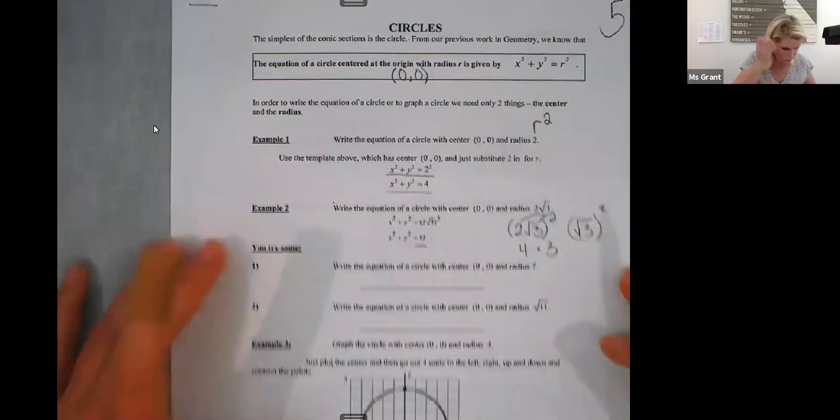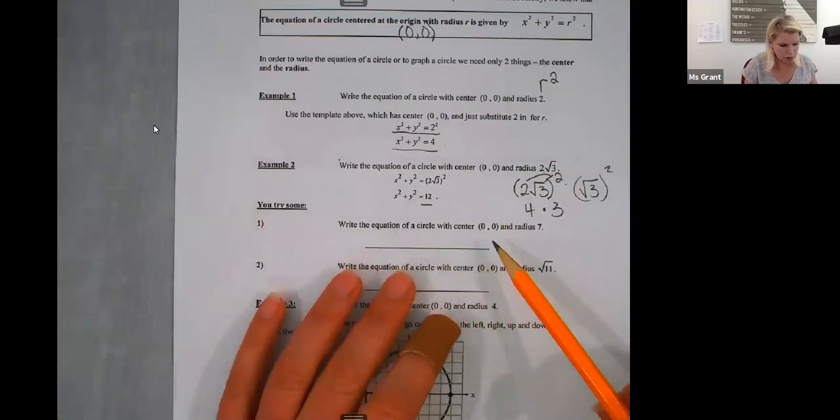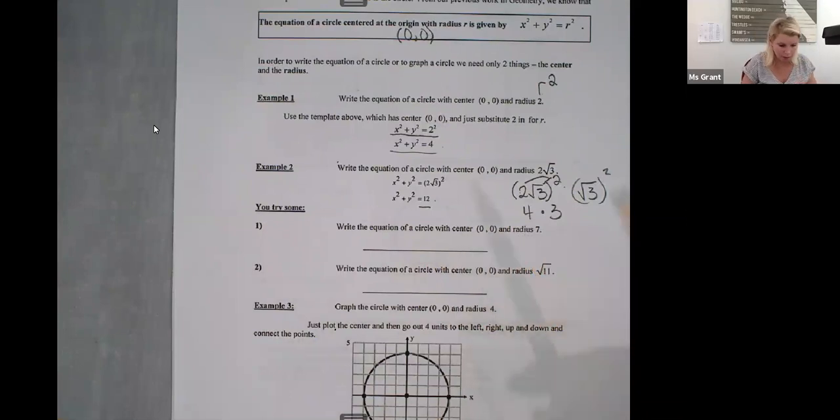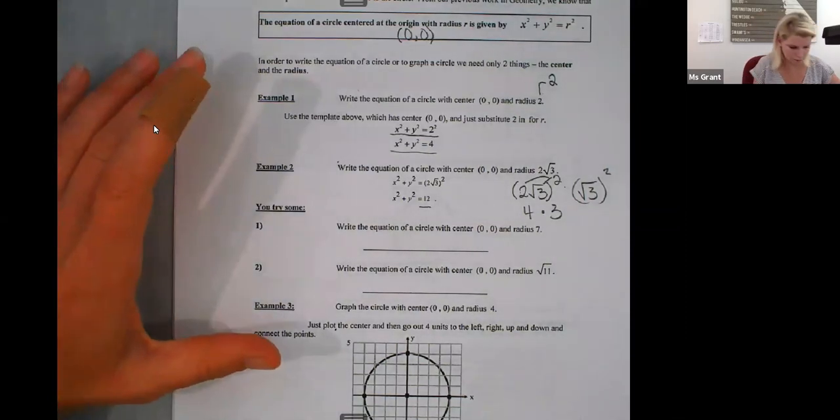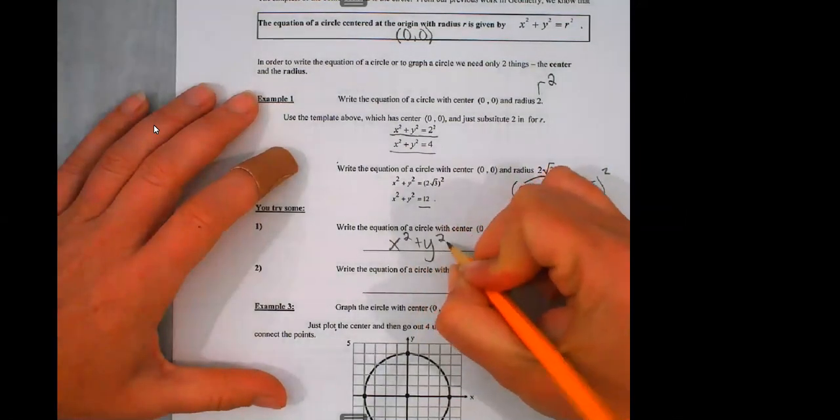Number one. Write the equation of a circle with center zero, zero and radius of seven. Okay. So you guys try that on your own. It starts out with x squared plus y squared, but then the radius is seven. So go ahead and try that one on your own. And then someone tell me what you got. Is it x squared plus y squared equals 49? Yes, it is. Excellent.